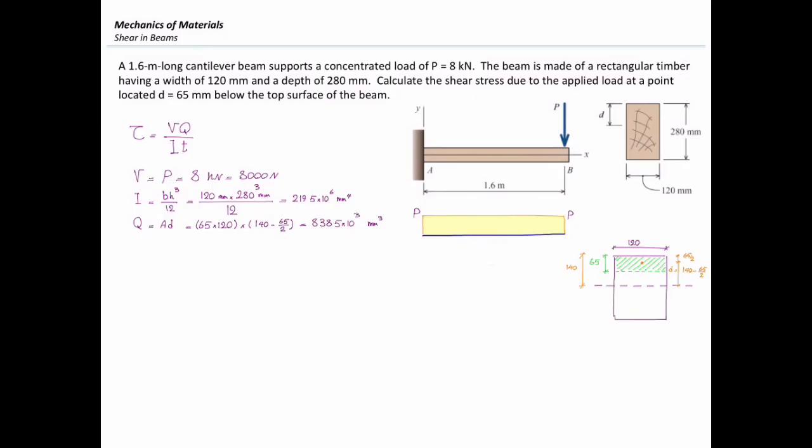The last parameter that I need to determine here is T or thickness. Thickness here is the thickness of cut section. So if I get back to the rectangle that I have here, the cut section here has the thickness of 120 millimeter. I'm using a blue color. The dashed line here shows the cut section which the thickness is clearly 120 millimeter. So thickness is 120 and I am ready to go and plug the values into shear stress equation.